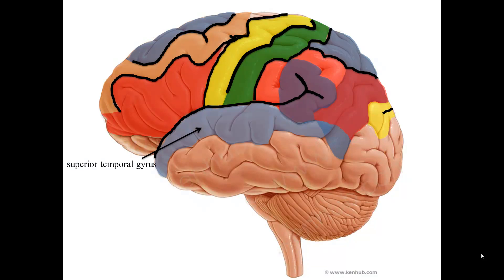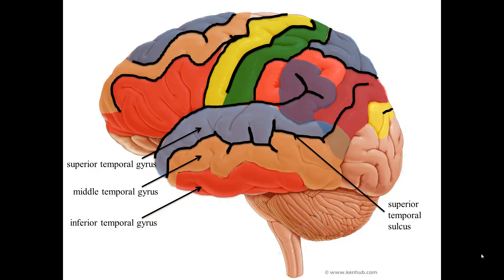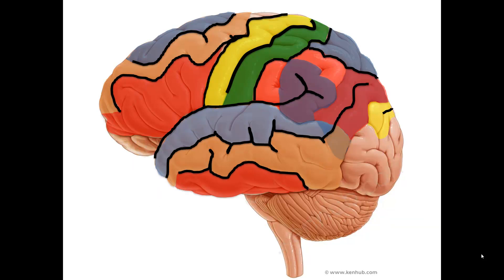The temporal lobe is split into the superior temporal gyrus, middle temporal gyrus, and inferior temporal gyrus by the superior temporal sulcus and inferior temporal sulcus. Here is a look at the frontal, parietal, and temporal lobes all highlighted without labels.